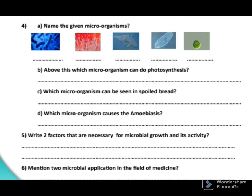Let's go to part D: which microorganism causes amoebiosis? Before explaining the answer, let me explain diseases caused by microorganisms. Corona, Dengue, and AIDS are viral diseases. Typhoid fever and tuberculosis are bacterial diseases. Scabies and pityriasis are fungal diseases. Malaria, leishmaniasis, and amoebiosis are Protista diseases. Therefore, the suitable answer for part D is Protista.